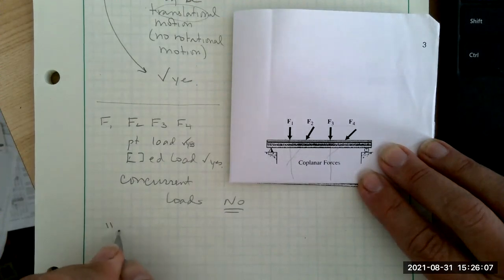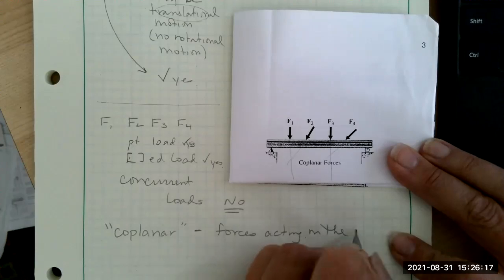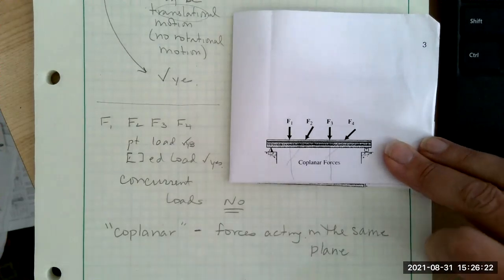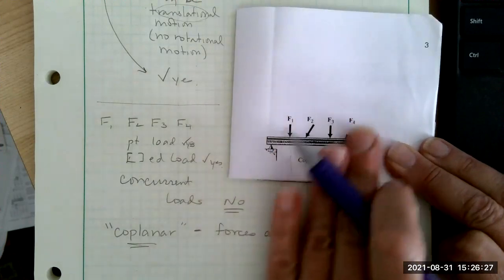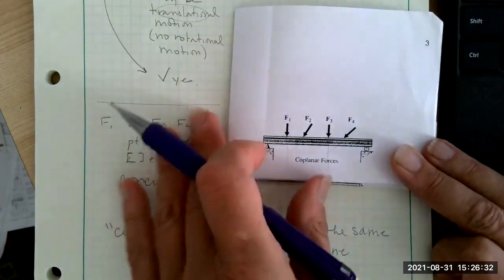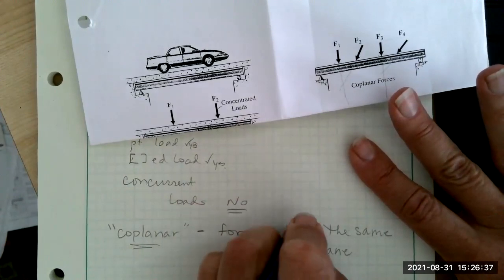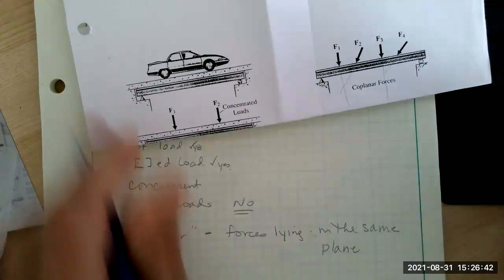The other thing, now we're introducing a new term called coplanar. And coplanar forces are forces lying on the same plane. All F1, F2, F3, and F4 are all lying on the same plane. Let's take a look, lying on the same plane, rather. I should say lying.